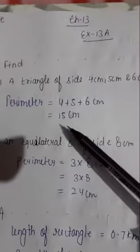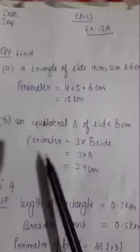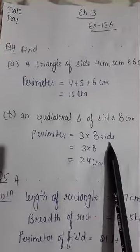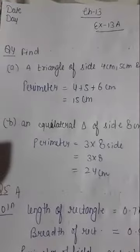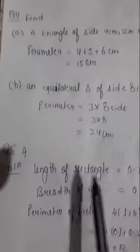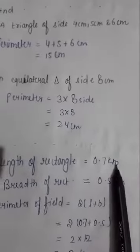4 plus 5 plus 6 equals 15 centimeter. Next question is an equilateral triangle of side 8 centimeter. Perimeter equals 3 times 8 because equilateral triangle has 3 equal sides, so 3 into 8 is 24 centimeter. Next, question number 5, length of rectangle is 0.7 kilometer.